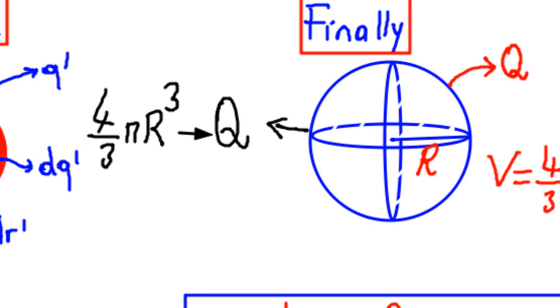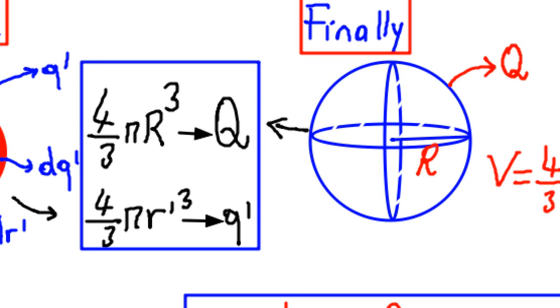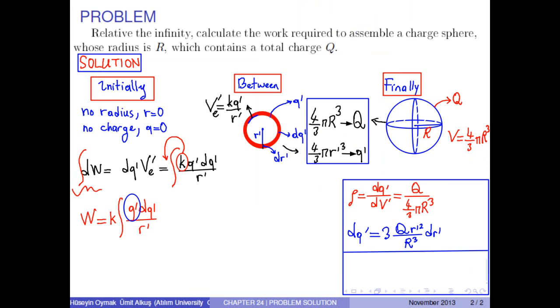And at any time, we have the volume 4/3 times pi times r' cubed and the charge q'. As a result, you can easily obtain that q' is r' cubed over R cubed times Q.